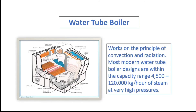The water tube boilers work on a principle of convection and radiation heat transfer. Most modern water tube boiler designs are within the capacity range of 4,500 to 120,000 kg per hour of steam at very high pressure.